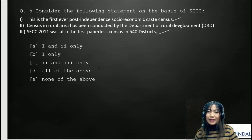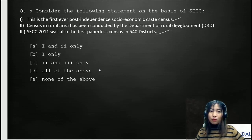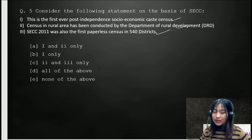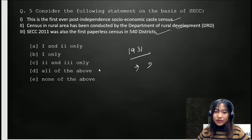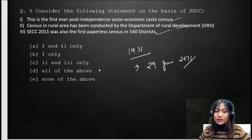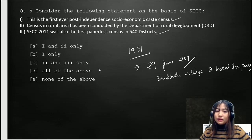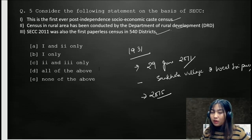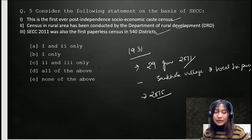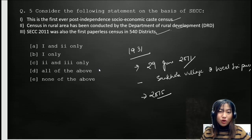SECC was the first ever post-independence Socioeconomic and Caste Census conducted in India. The earlier such census was done in 1931. The surveys started on 29 June 2011, first conducted in Sakola village in West Tripura district, and the results were released in 2015. The census in rural areas was done by the Department of Rural Development; urban areas by the Department of Housing and Urban Poverty; and the caste census by the Ministry of Home Affairs.